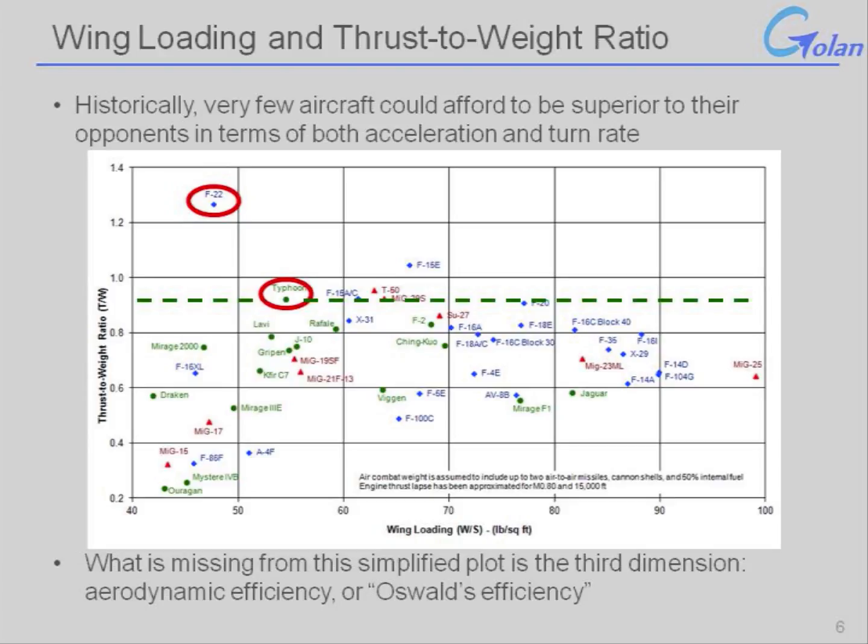You can also see that both of these aircraft are clearly biased towards the air-to-air role: very low wing loading and relatively high thrust-to-weight ratio. Both are excellent in the air-to-air mission. It just so happens that the F-22 Raptor is in a class by itself.